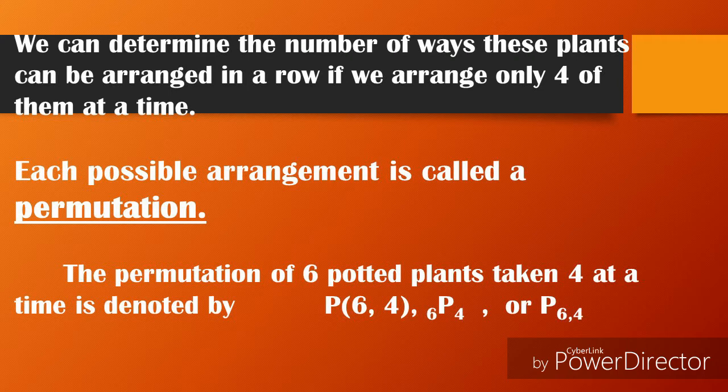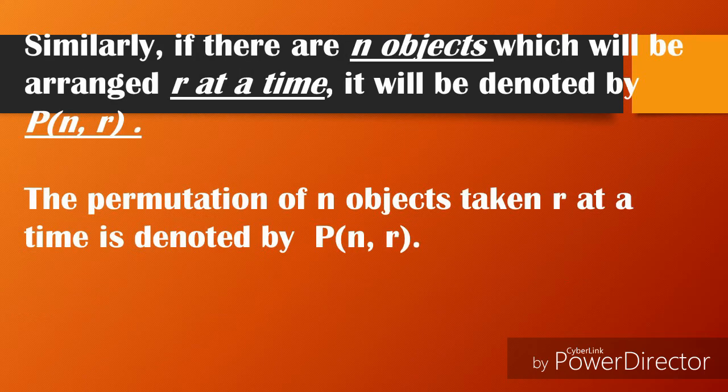Similarly, if there are n objects which will be arranged r at a time, it will be denoted by P(n, r). The permutation of n objects taken r at a time is denoted by P(n, r).